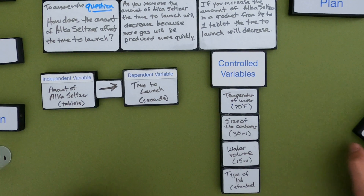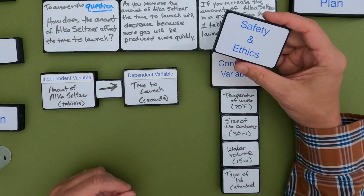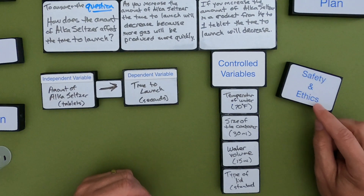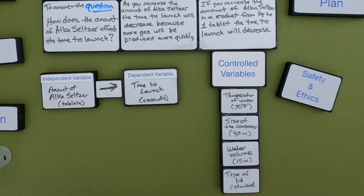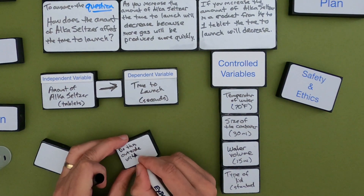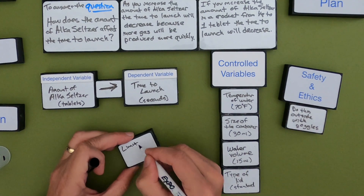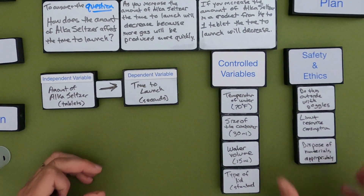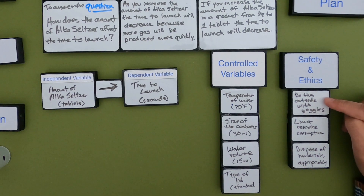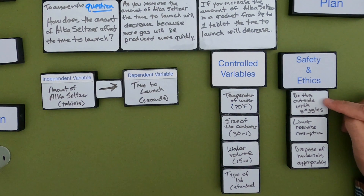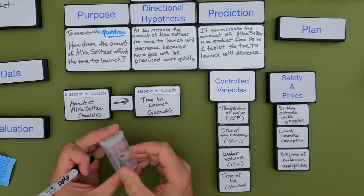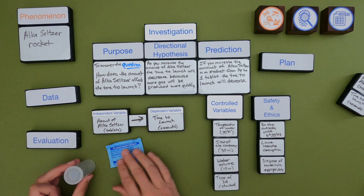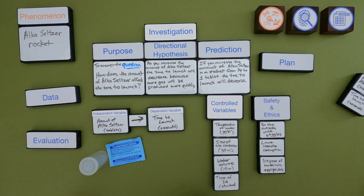The last thing you always want to think about when planning is safety and ethics. For safety concerns: you'd definitely want to do this outside since it's a rocket and could be painful if it hit you in the face. Also limit resource consumption — it would be cool to have a massive rocket, but you'd be wasting resources. And make sure you're disposing of all materials appropriately.